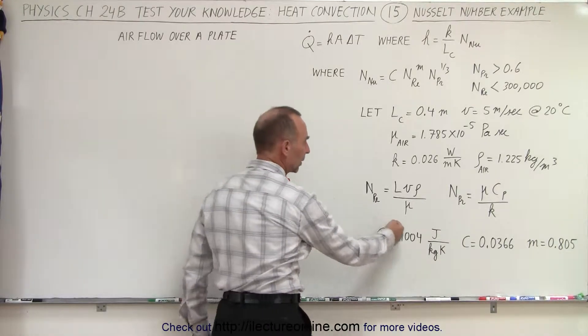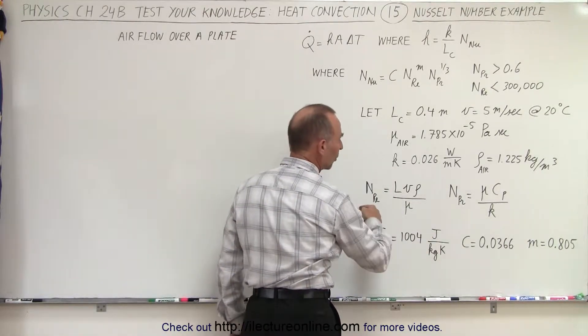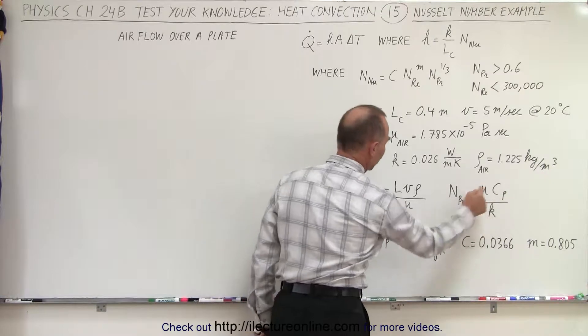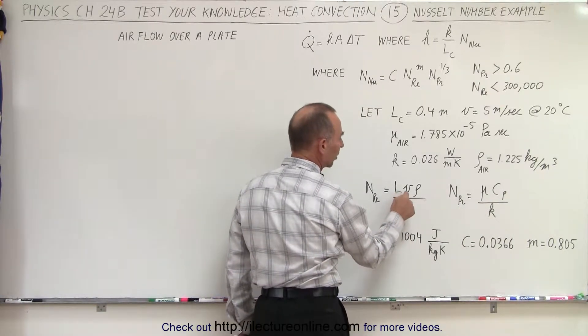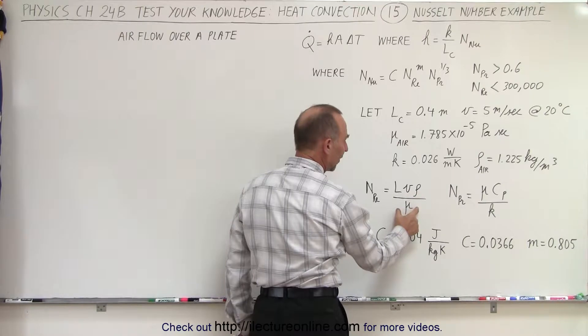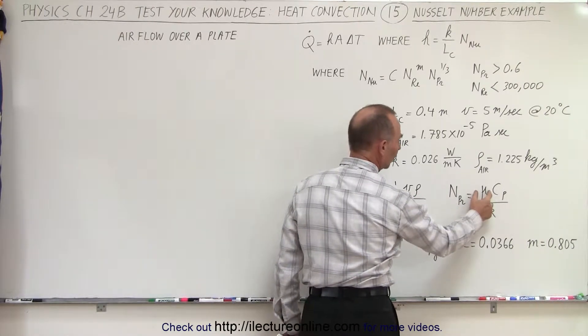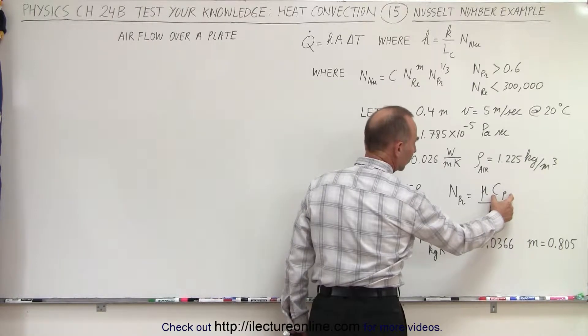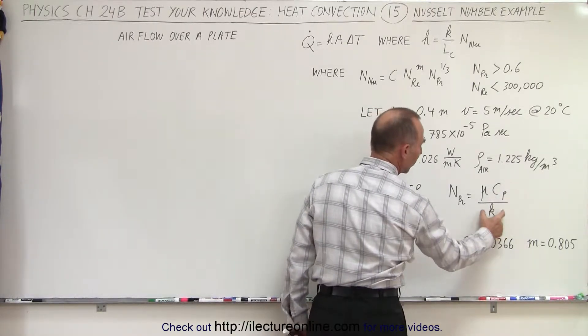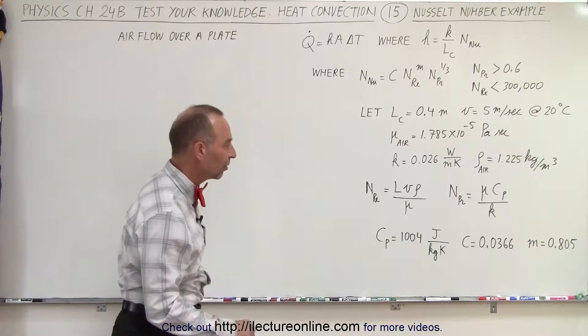So the Reynolds number can be calculated using this equation, the Prandtl number using this equation. Characteristic length, the velocity of the fluid, the density of the fluid, divided by the viscosity of the fluid. The Prandtl number is the viscosity of the fluid times the heat constant, or the specific heat, divided by the conductivity constant.